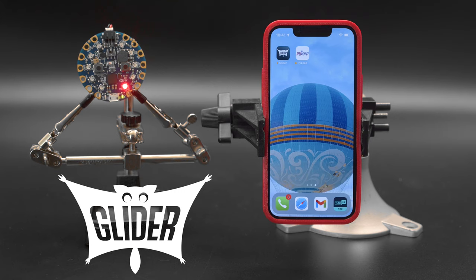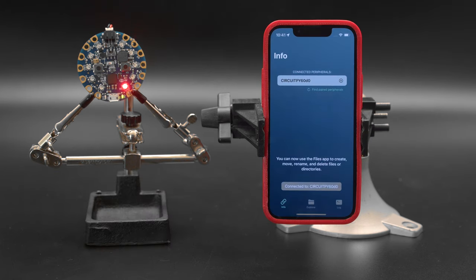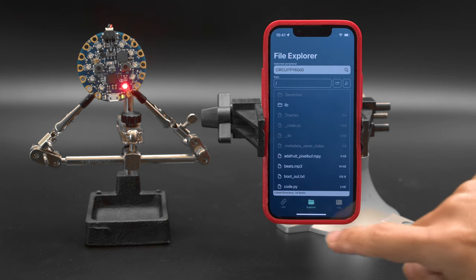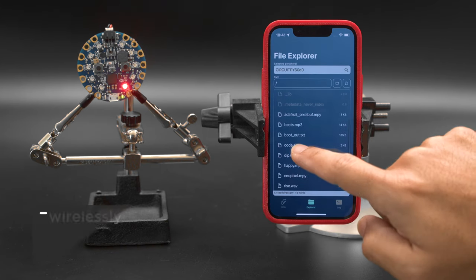Next up, we're checking out Adafruit's Glider app. This is a mobile app that lets you browse your files on your CircuitPython device over Bluetooth. Using the File Explorer, you can tap on the files to edit them.